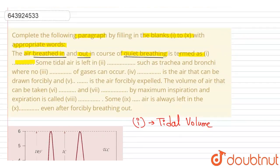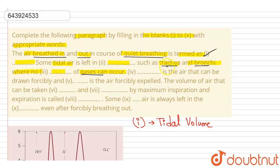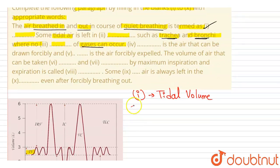So number one is tidal volume. The next sentence is: some tidal air is left in dash — such as trachea and bronchi — where no dash of gases can occur. The trachea and bronchi are part of the respiratory passage, so number two will be respiratory passage.